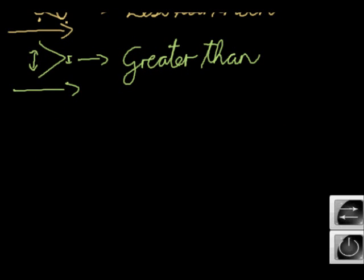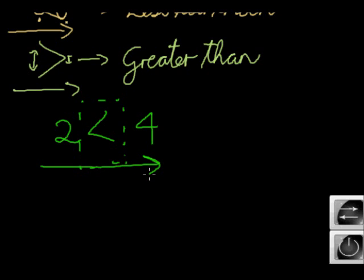we can go ahead and understand a few things. So, for example, if I now write that two and four, what sign am I going to use in between them? The less than. Because we read from left to right. Two is less than. The smaller side of that sign is less than four.